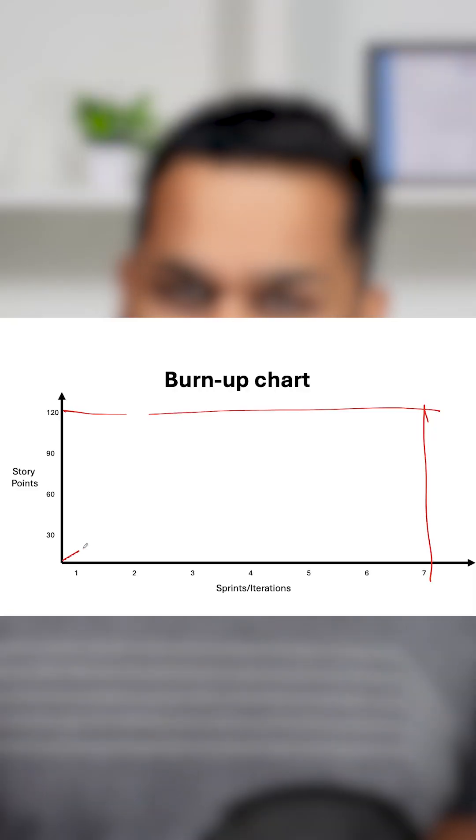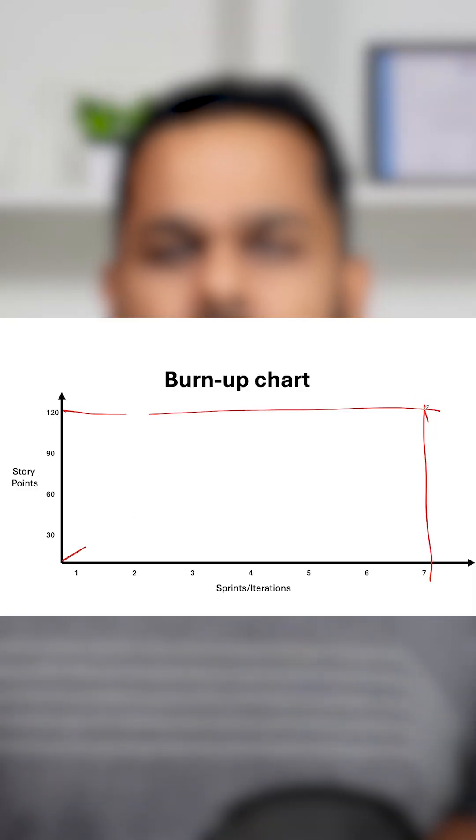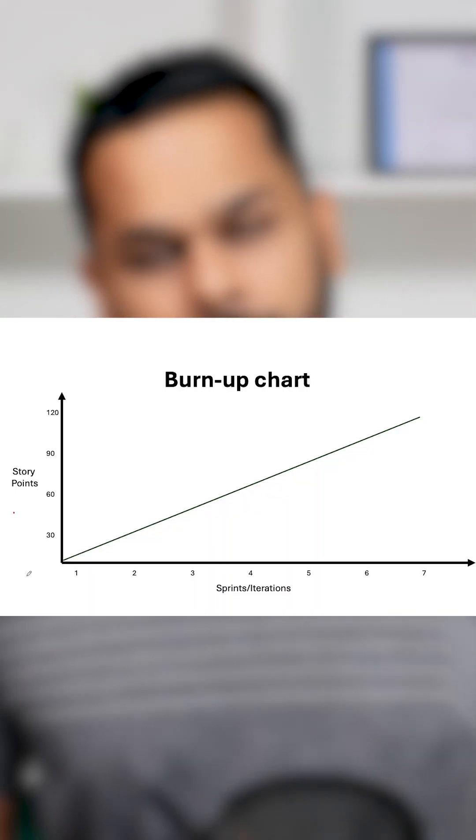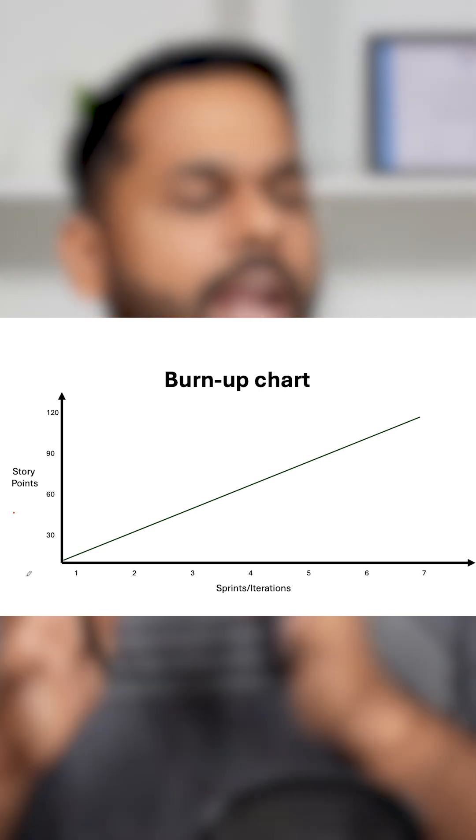Because it is a burn-up chart, we are tracking how many story points have been completed. As a plan, we would start with 0 and try to complete 120 story points by the end of the 7th sprint — so your chart would look something like this. This will be your plan.